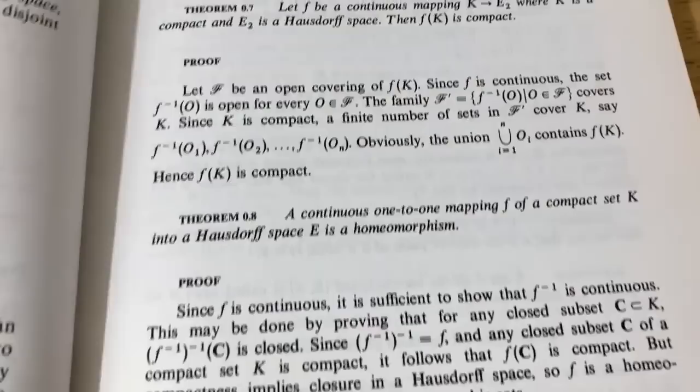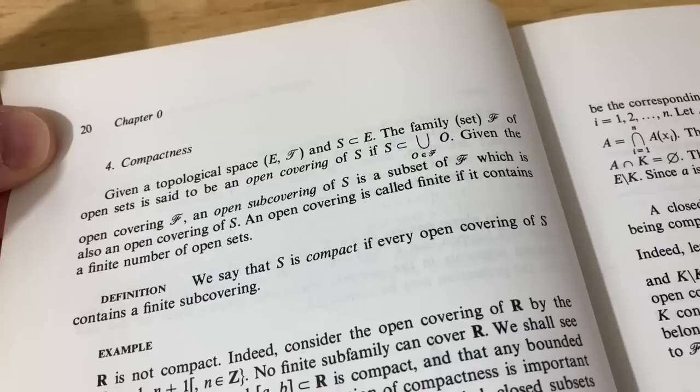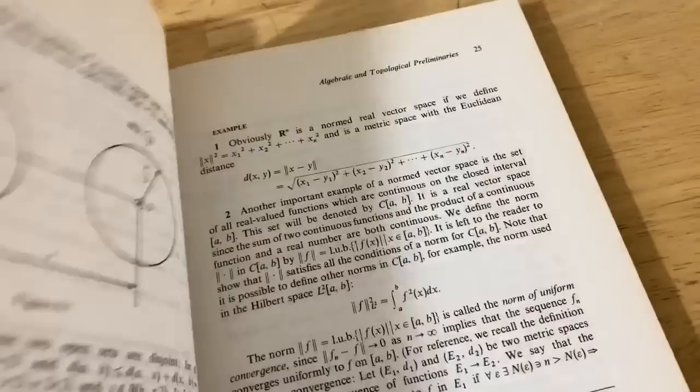Compact sets, compactness. How do they define compactness? Yeah. Through open coverings. Yeah. There's different ways you can define compact sets, especially like in metric spaces. Let's see if they have, talk about norm metric spaces.